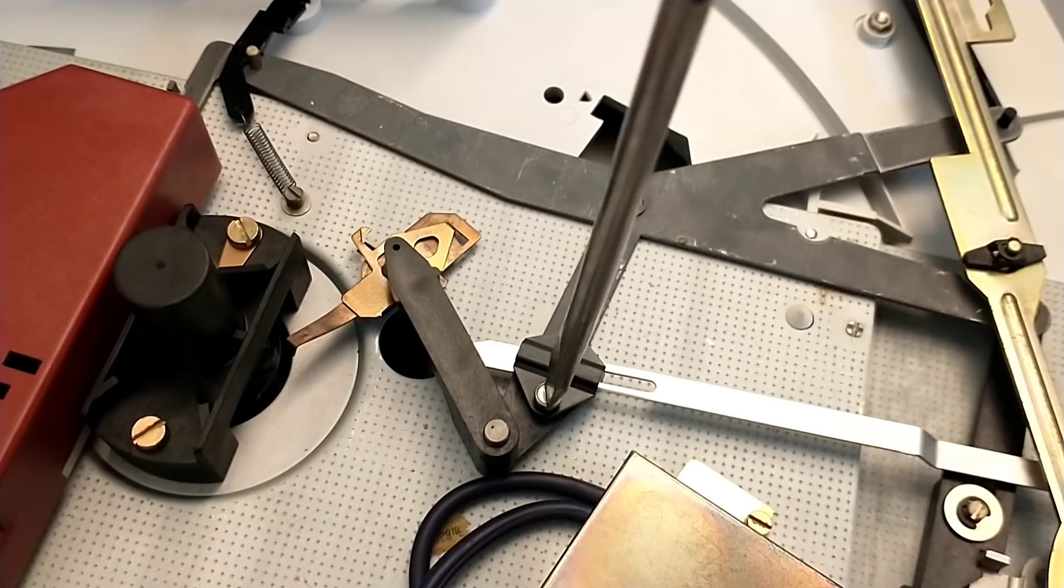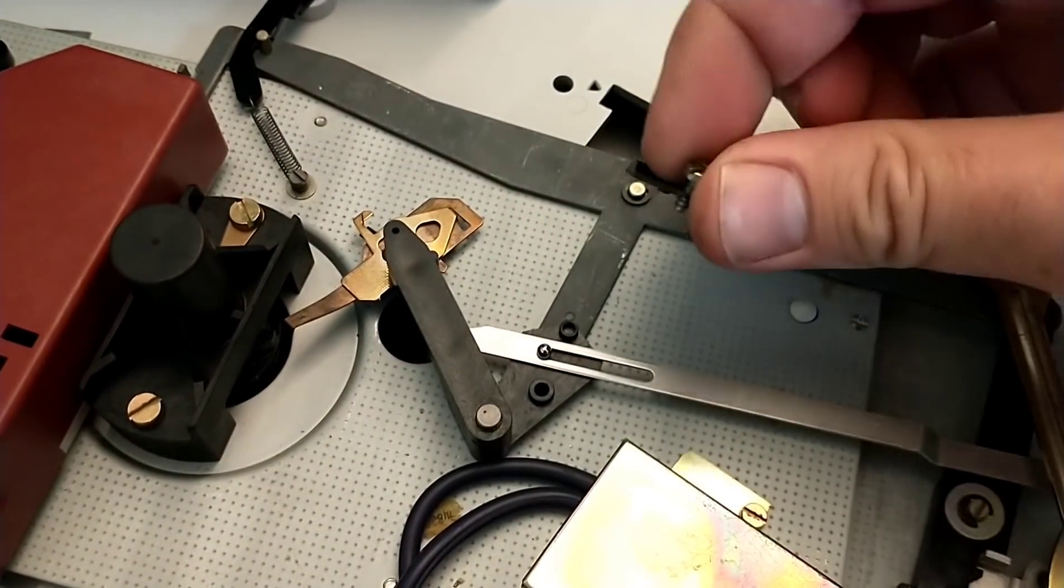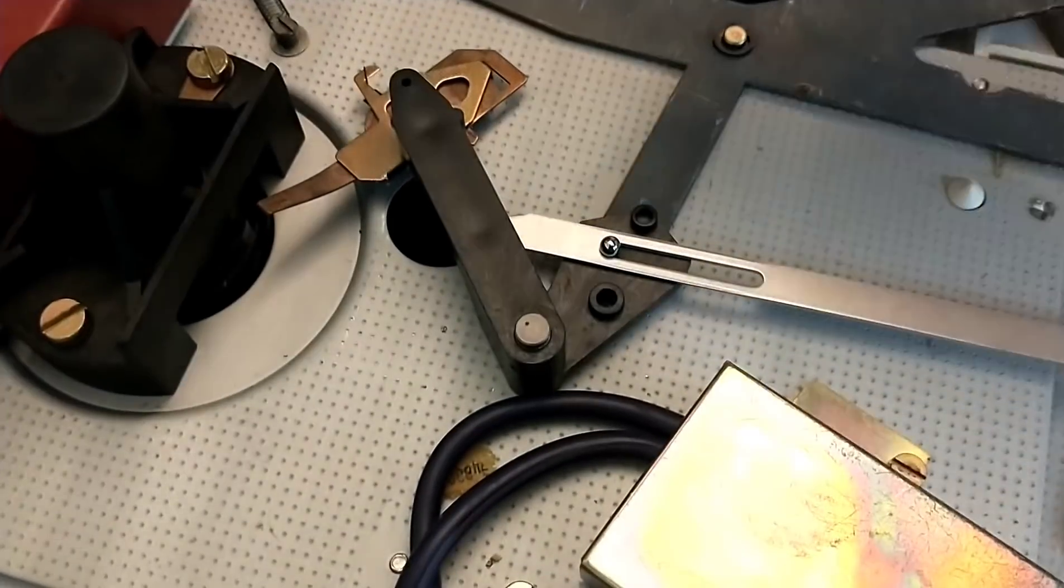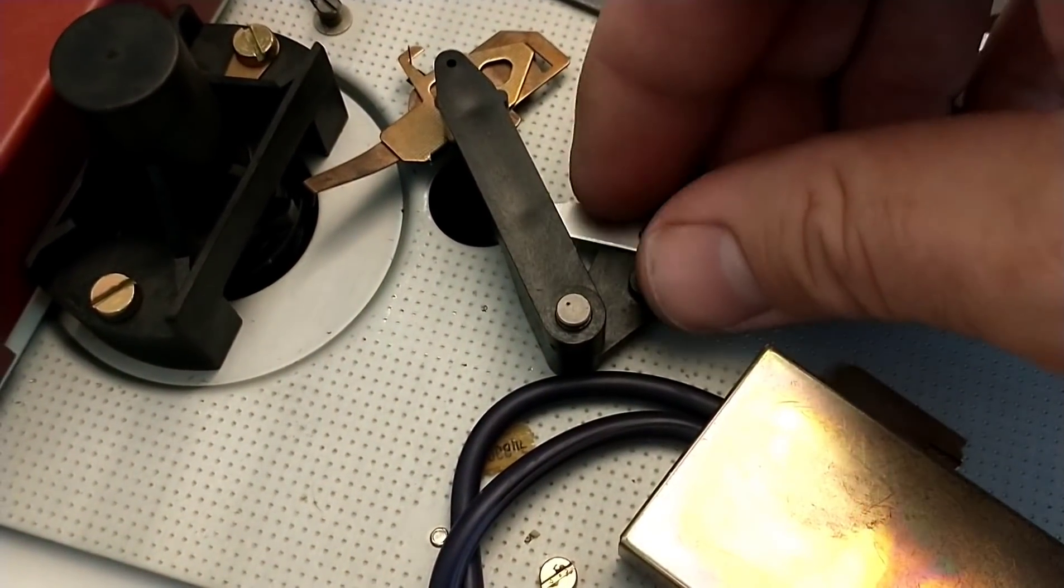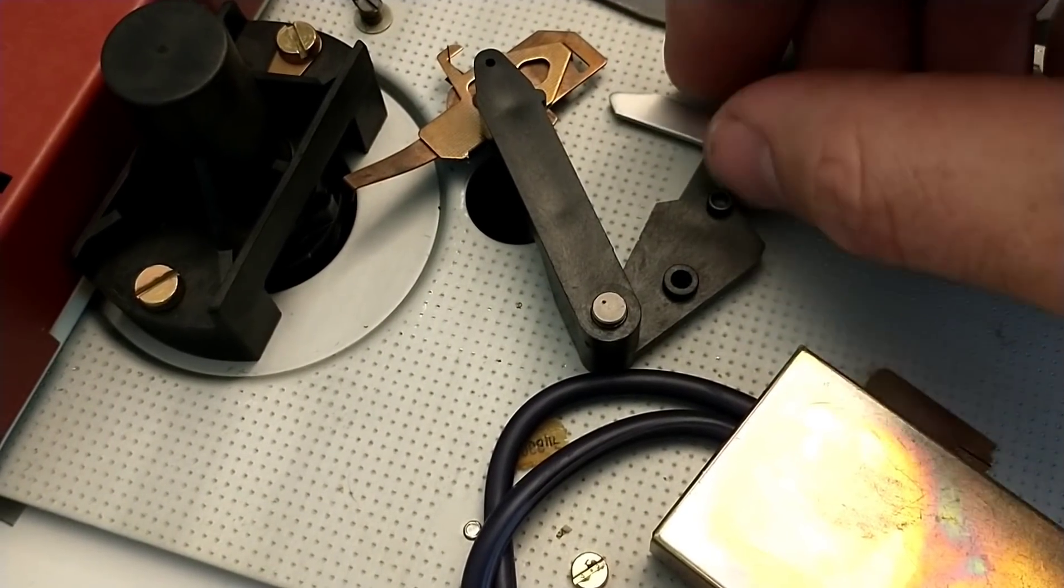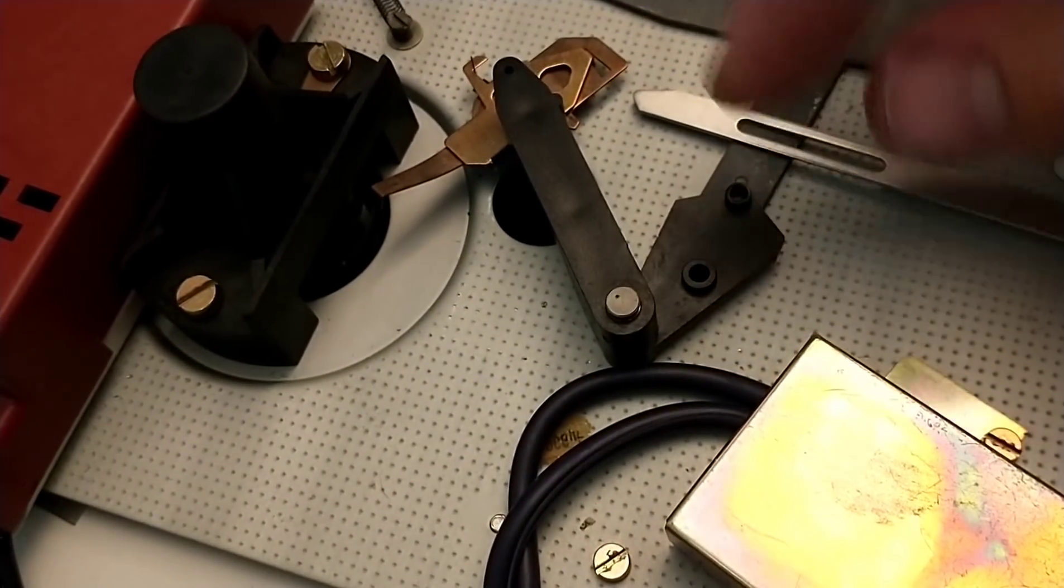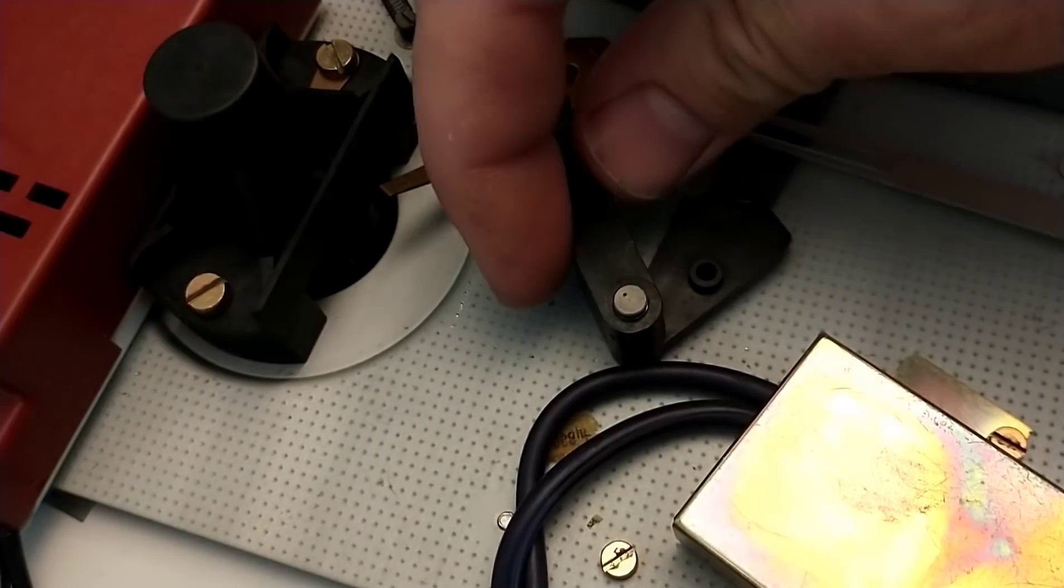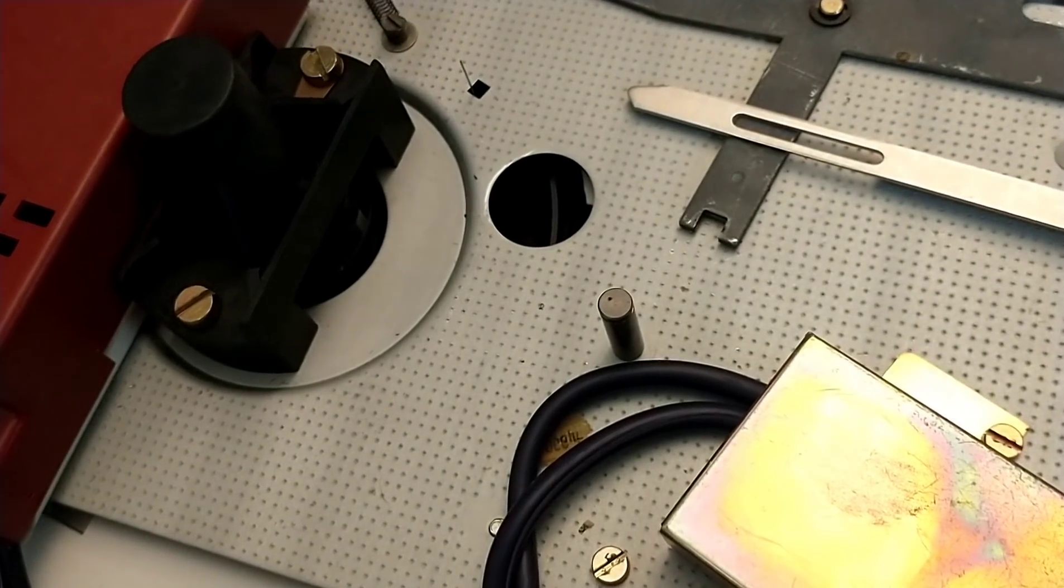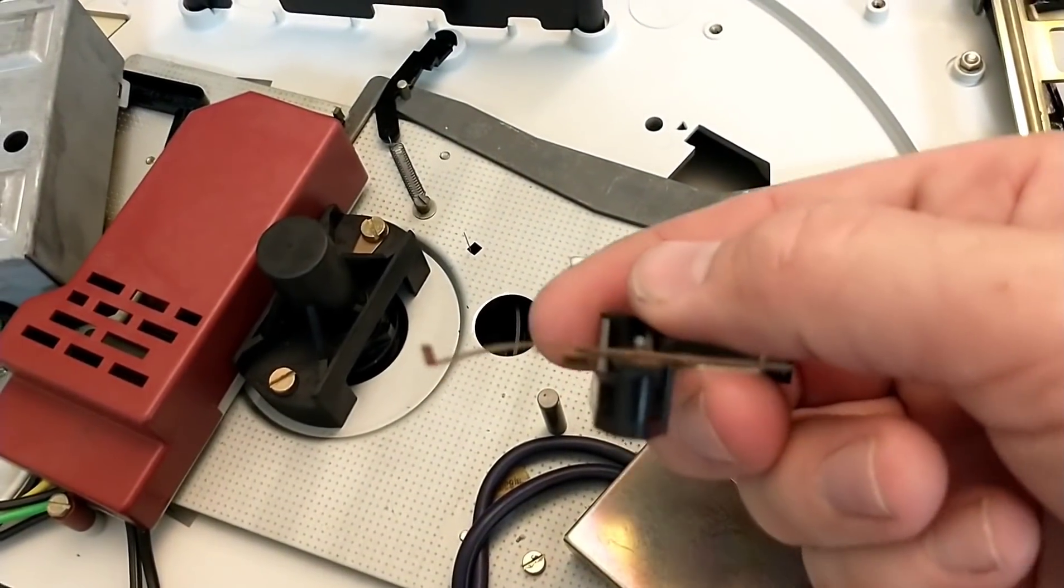Now be careful because the ball bearing inside of here is going to want to run away on you and you need to keep track of it. See there it is. Don't lose that ball bearing. That is a big component in making this system work without binding.